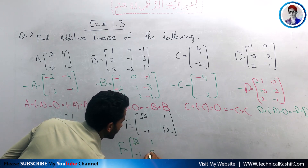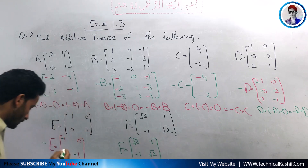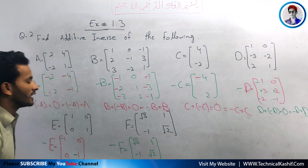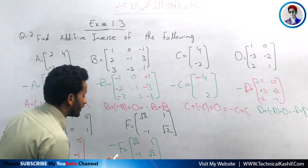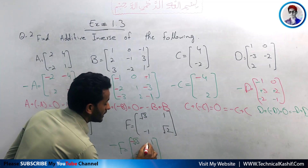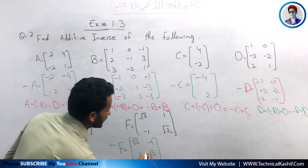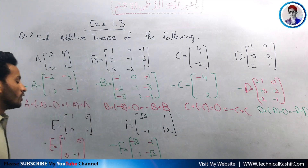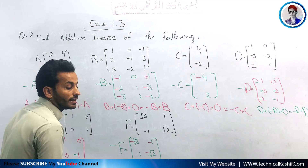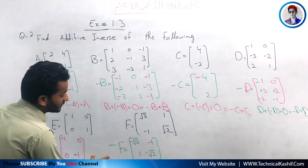For matrix F, which equals: square root of 3, 1, minus 1, and square root of 2 — the additive inverse minus F is found by changing all signs. So minus F becomes: minus square root of 3, minus 1, plus 1, and minus square root of 2. This is the additive inverse of matrix F.